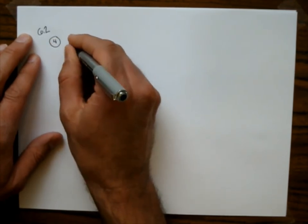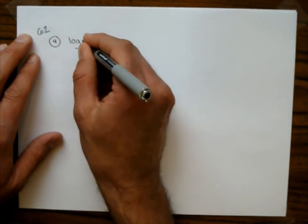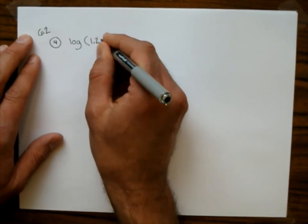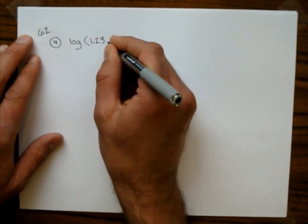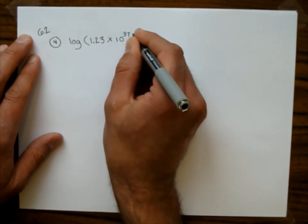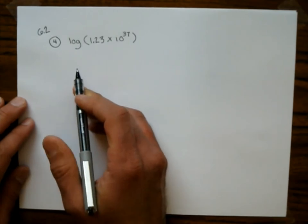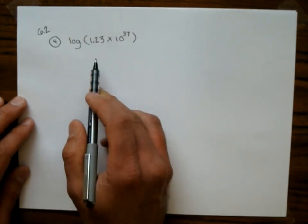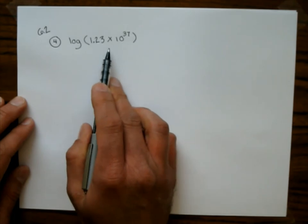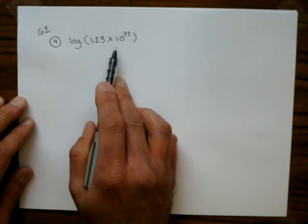So for number 4, they give you this logarithm: log of 1.23 times 10 to the 37th power. The instructions are to expand the log and simplify. When they say expand the log, they do not want the argument to have a product, quotient, power, or root.